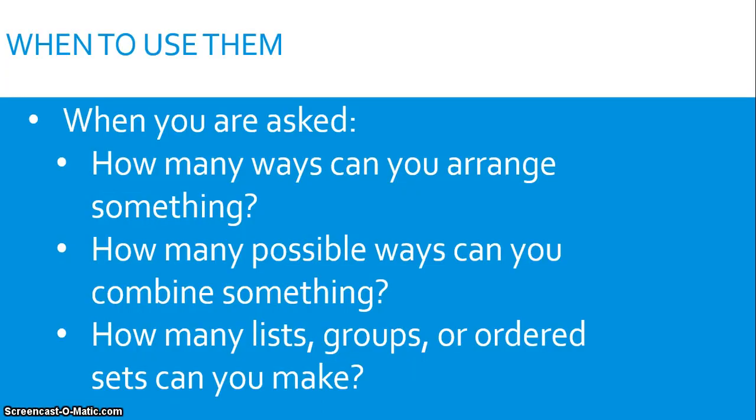So basically, I'm sure you've heard of those problems where you're asked how many groups of three can you make from a set of ten or whatever, right? You've probably been asked a question something along the lines of how many ways can you arrange something, how many possible ways can you combine something, how many lists, groups, or ordered sets can you make from a larger group? In either of these situations, you've probably been told to use either a permutation or a combination, depending on whether or not the order mattered.